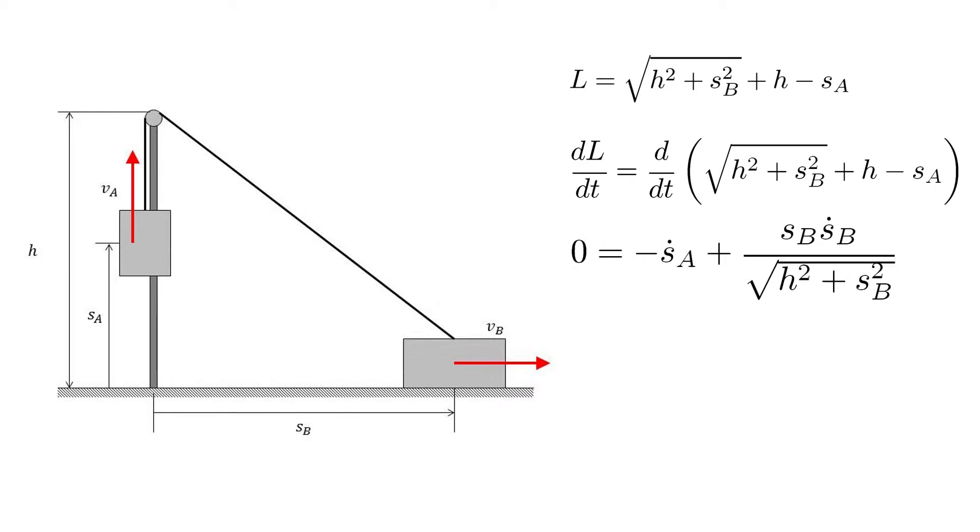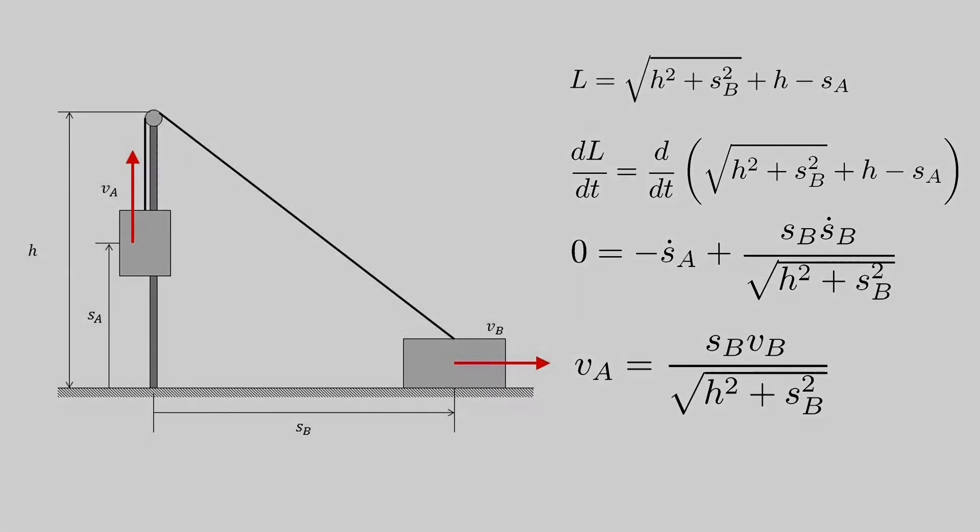We exploit this by taking a time derivative of our length expression, as the length side will be zero. The chain rule gives us a relationship between the remaining values, and we can predict the velocity of the hanging cart by the velocity and position of the other cart.